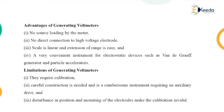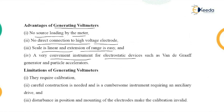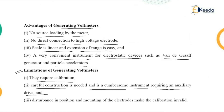Advantages of the generating voltmeter: no direct loading on the meter as it operates at low current; no direct connection to the high voltage electrode; the scale is linear and can be extended by adding resistance; it is convenient for electrostatic devices like Van de Graaff generators. Limitations include: it requires regular calibration, careful construction is needed as it is a cumbersome instrument requiring an auxiliary drive, and any disturbance in position or mounting of the electrodes invalidates calibration.